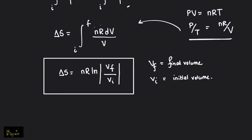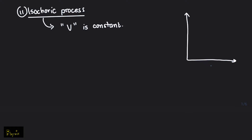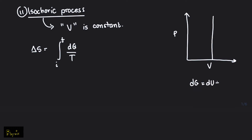Moving on to our next thermodynamic process, which is the isochoric process. In an isochoric process, the volume is constant. The PV diagram for the isochoric process is a vertical line. We know that delta S, the change of entropy, is the integral of dQ over T. And dQ is basically du plus dW. Since dW is 0 because there is no change of volume, dQ is basically du, which is the change of internal energy.